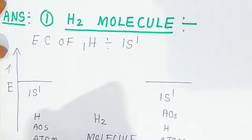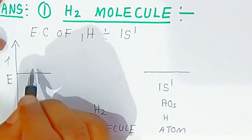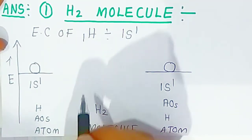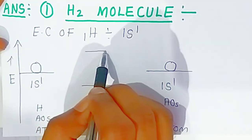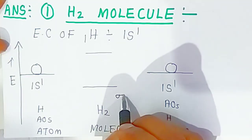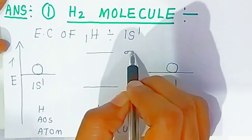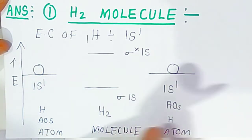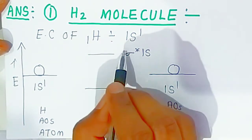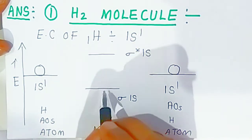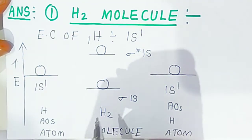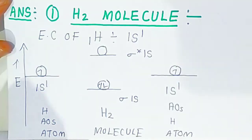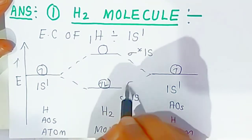Both hydrogen atoms have 1s¹ electrons. Since the s orbital is spherical, combining the two 1s orbitals forms bonding and antibonding molecular orbitals. Bonding molecular orbitals always have lower energy than antibonding molecular orbitals. The bonding orbital formed is called sigma 1s (σ1s), and the antibonding orbital is called sigma star 1s (σ*1s). Two atomic orbitals combine to form two molecular orbitals. The electrons go into the bonding molecular orbital; the antibonding molecular orbital remains empty.